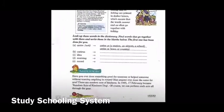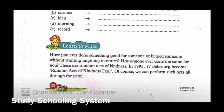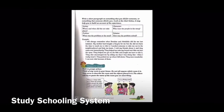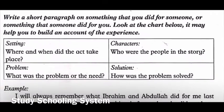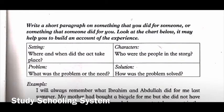Now back to page number 32 — learn to write. Have you ever done something good for someone or helped someone without wanting anything in return? Has anyone ever done the same for you? These are random acts of kindness. In 1995, the 17th of February became random acts of kindness day. Of course we can perform such acts all through the year. Write a short paragraph on something that you did for someone or something that someone did for you. Look at the chart below — it may help you build an account of the experience.